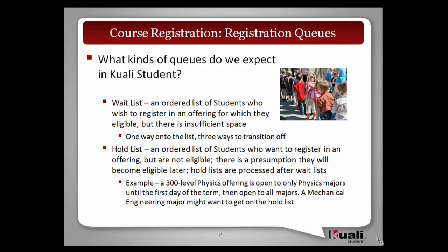The hold list is also an ordered list, but these are students who want to register for an offering but are not currently eligible. The difference from the wait list is that these students presume they will become eligible at some point. We keep things in an ordered way so that when students become eligible later, if there's sufficient space, they can be brought in. For example, a Physics 300 offering open only to physics majors until the first day of term — a mechanical engineering major would become eligible on or after that first day and could register from the hold list if space is available.